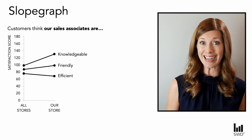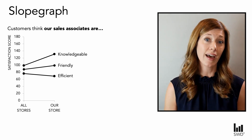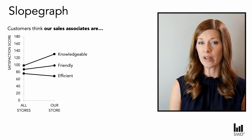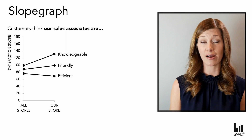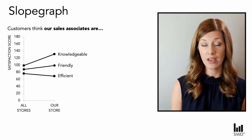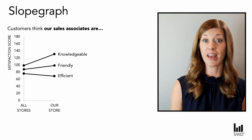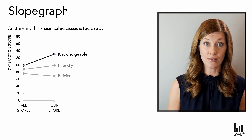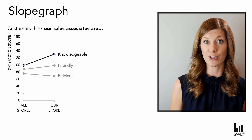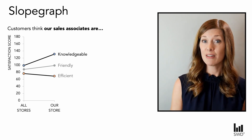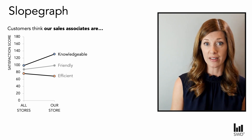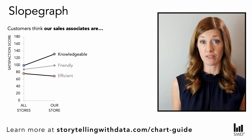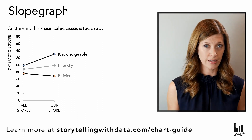Let's change the scenario again. Imagine we're looking at survey data — still in the retail sports space, but now looking at relative satisfaction about our sales associates compared to sales associates across the overall company. With all stores on the left and our store on the right, I can see that our sales associates score higher and outperform the average when it comes to product knowledge, but underperform when it comes to relative efficiency. Slope graphs are great at drawing attention to where things are different, because diagonal lines are very attention-grabbing.